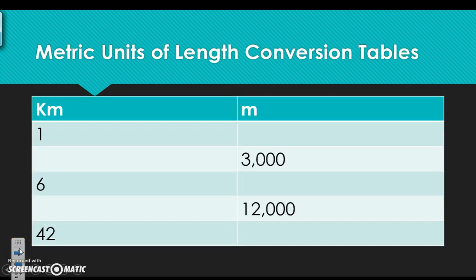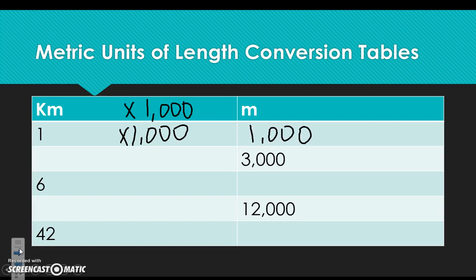Metric units of length conversion tables. Remember, a kilometer times 1,000 gives you how many meters you have, because a kilometer is 1,000 times greater than a meter. So multiply by 1,000 to convert kilometers to meters. Going backwards, divide by the same value — 3,000 divided by 1,000 is 3, and the check is 3 times 1,000 equals 3,000.